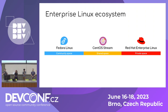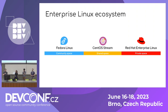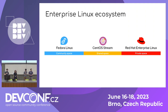Then we get into CentOS Stream, which is a shared space where we want to define where the next version of enterprise software, enterprise Linux, is going to go — which features we actually want to have there, which changes. And then finally, you've got the Red Hat product, Red Hat Enterprise Linux, and all the other variants, which are products made by Red Hat and sold.